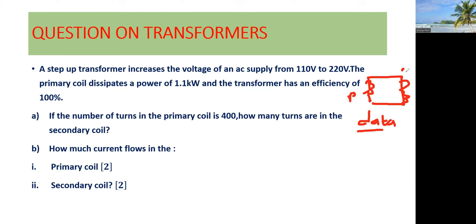So this one is the primary coil, that one is the secondary coil. So let's collect data. This is the primary voltage. Let's say VP, primary voltage is equal to 110 volts. Then secondary voltage is equal to 220 volts.